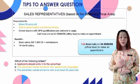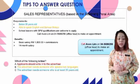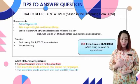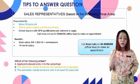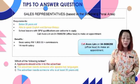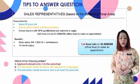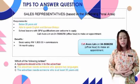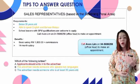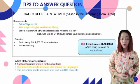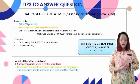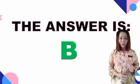Option C: the advertiser needs someone who is at least 35 years old, meaning 35 and above. However, from the text, it says below 35 years old, meaning younger than 35. Therefore, option C is incorrect. The only correct answer is option B.